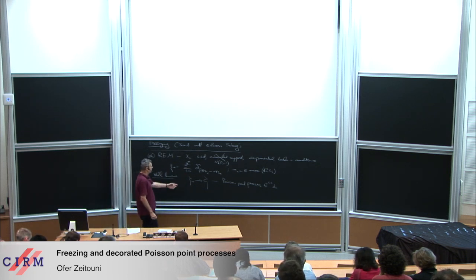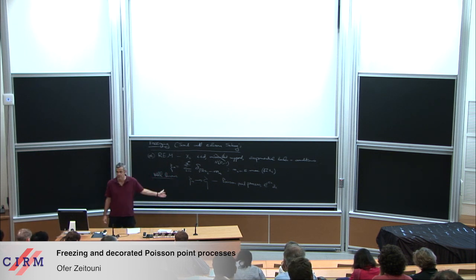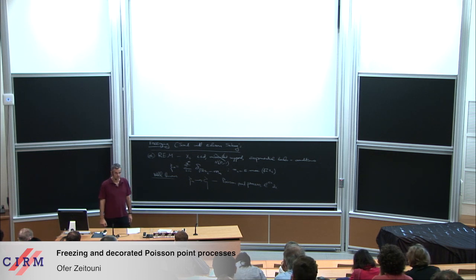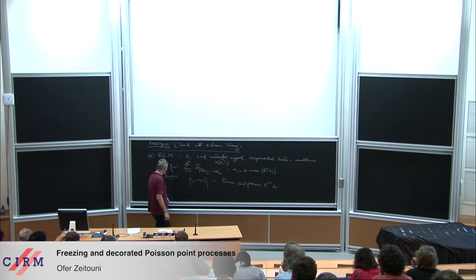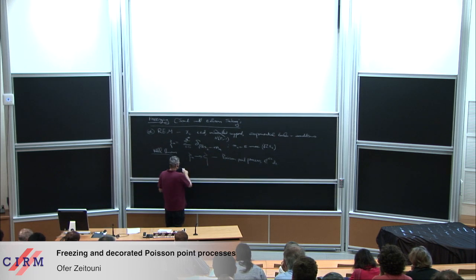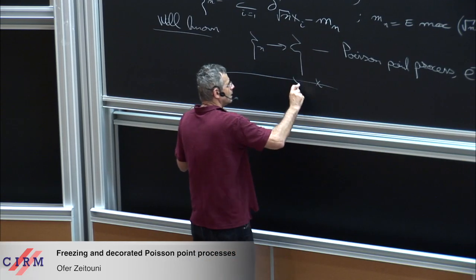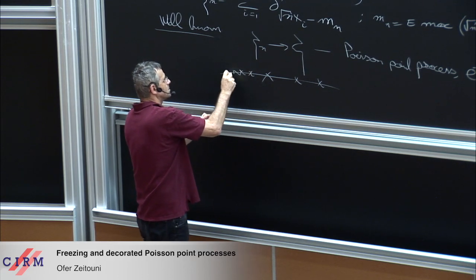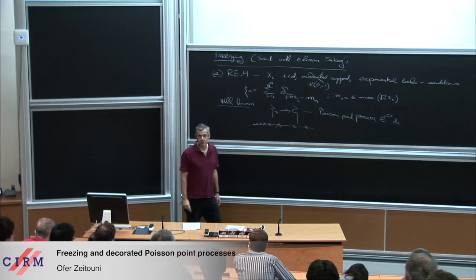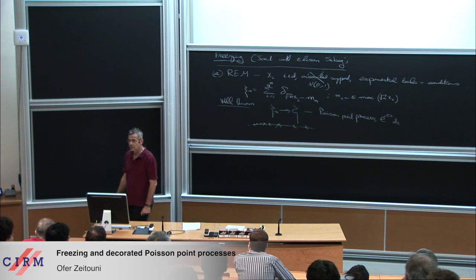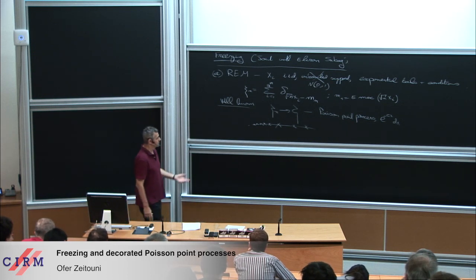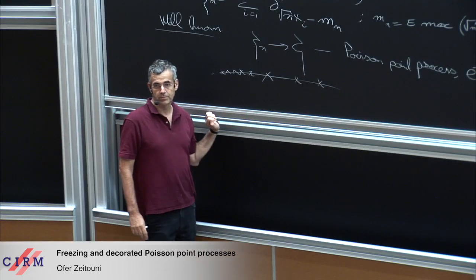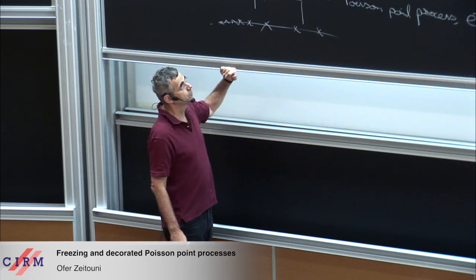The convergence is in the sense of vague convergence. If you take a function of compact support and integrate against the point process, you will have convergence of these random variables. The picture you should have in mind is that we have these points, and of course these points begin to accumulate towards minus infinity, but what you have is locally finite — so in any compact neighborhood you have a finite number of points.